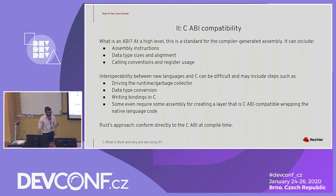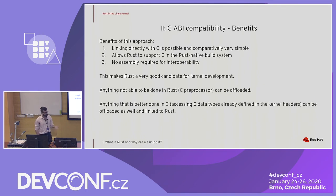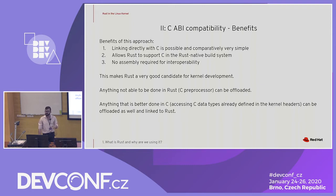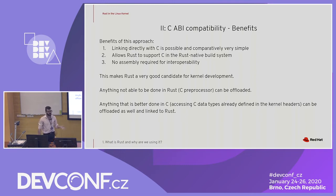Rust's approach is that you can explicitly coerce into C ABI compatibility, and we're able to link directly with C. This is pretty simple compared to some other approaches. Rust actually natively supports linking C directly into the Rust program in its build system, so even the build system works with it pretty simply and we really don't need any assembly for this whole process. This overall makes Rust a very good candidate for kernel development. Anything we are not able to offload to Rust, we're able to still do in C.